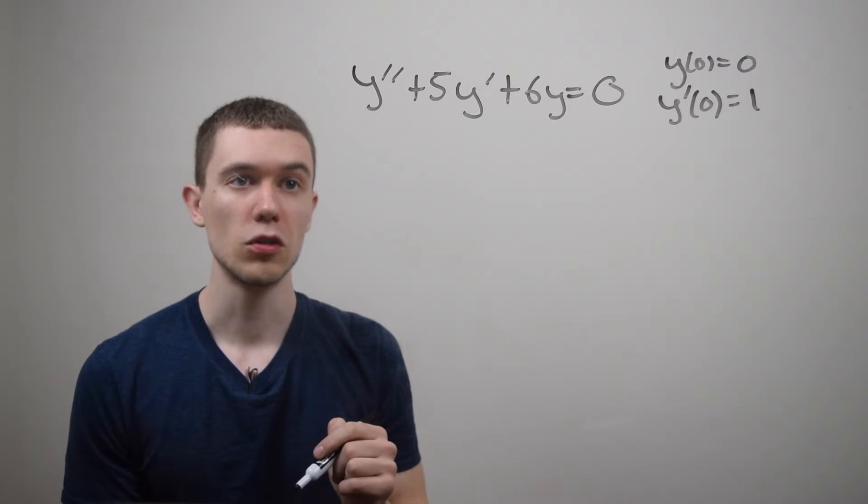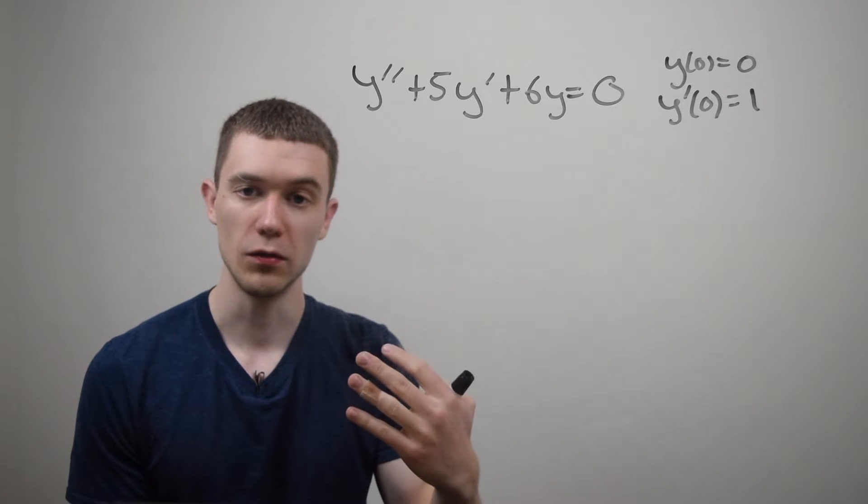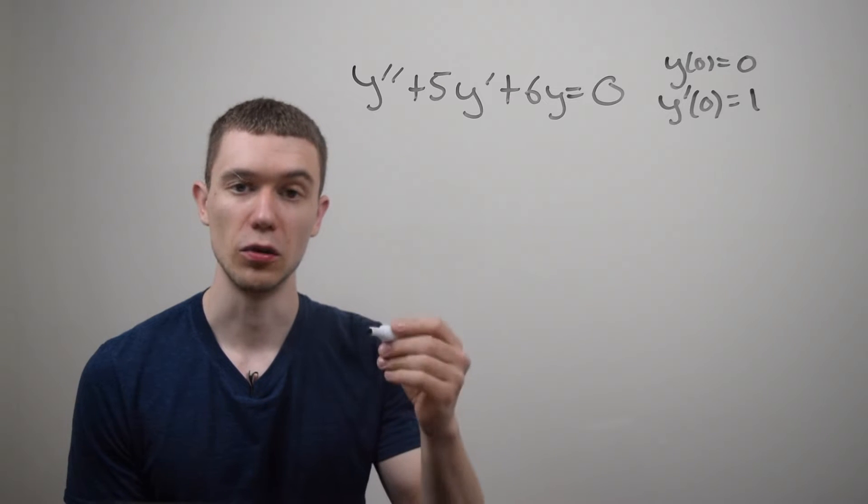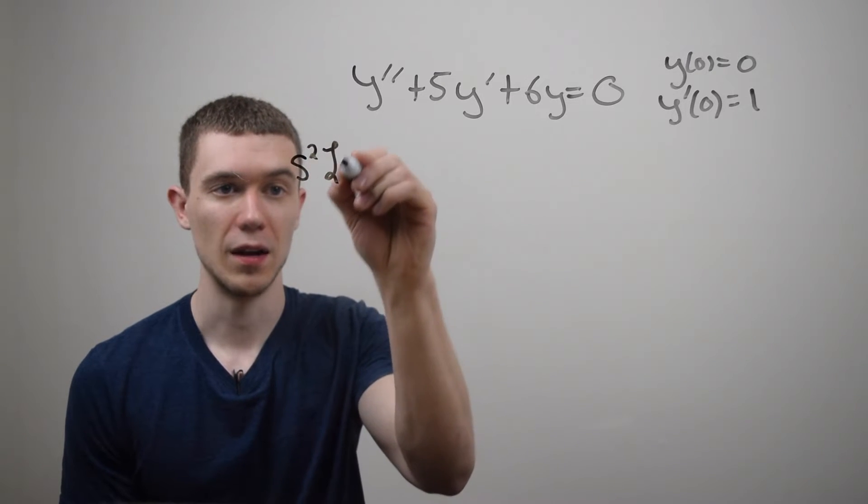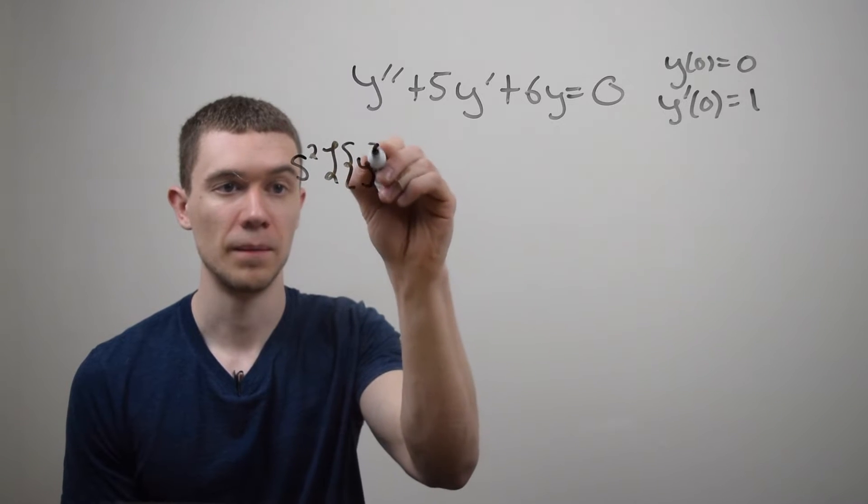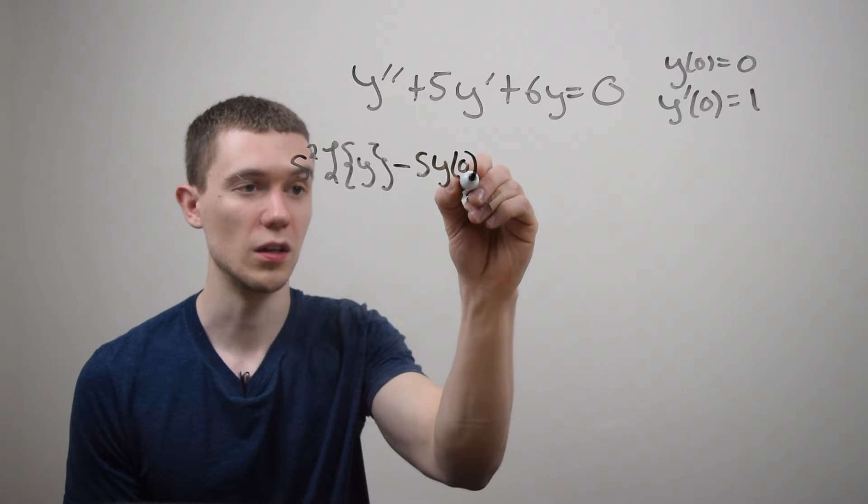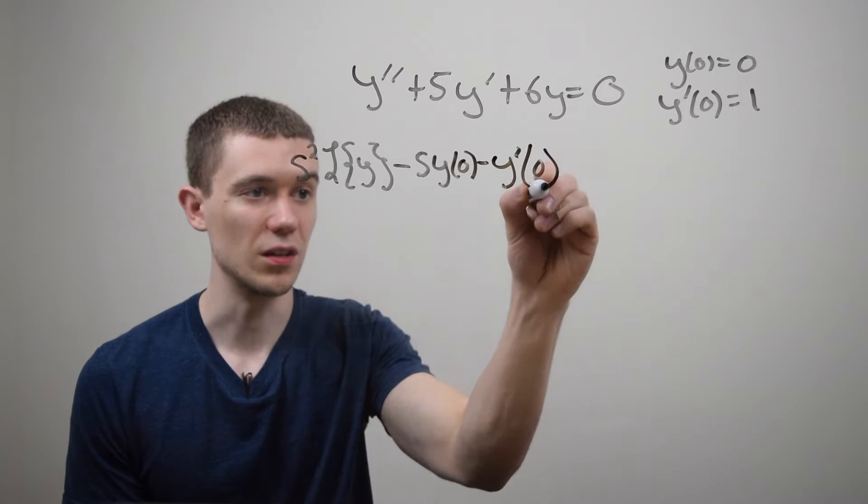Starting off the Laplace transform of y double prime, you've probably seen a table of Laplace transforms and we know the Laplace transform of a second derivative looks like this. It looks like s squared times the Laplace transform of y minus s times the first initial condition and then minus the second initial condition.